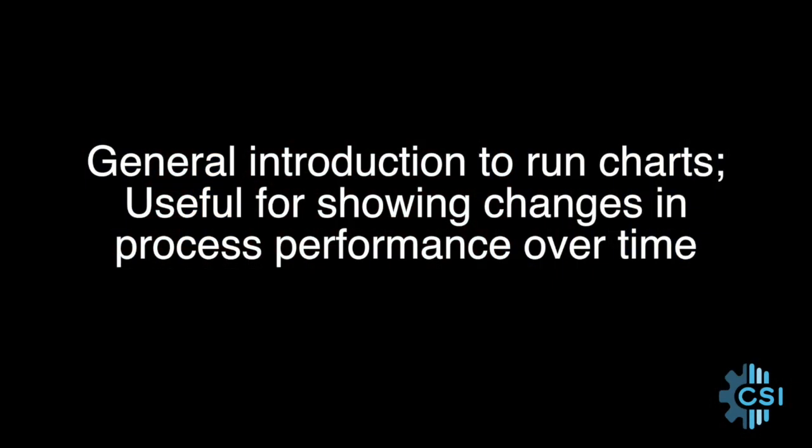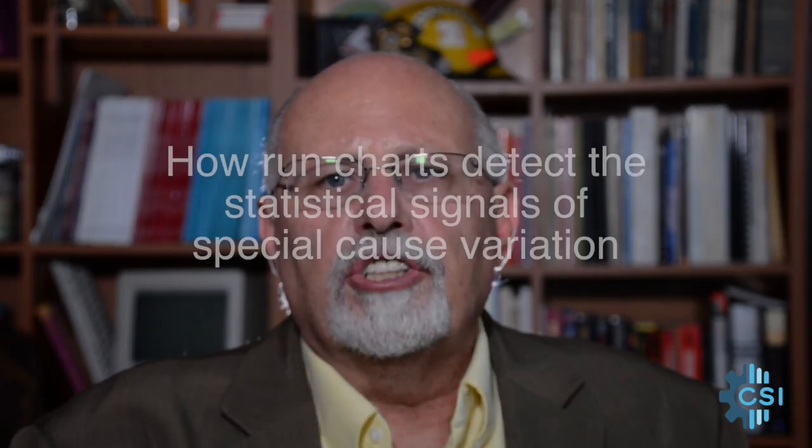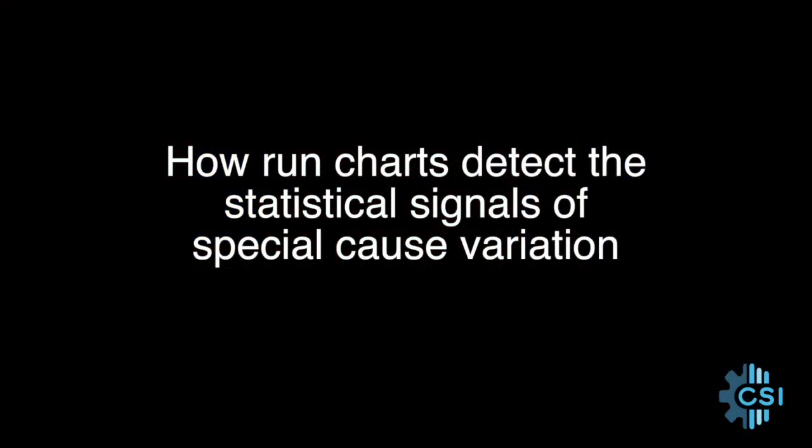This is part 4 in our series on run charts. In part 1, we learned about run charts in general, and why they are so helpful in seeing how process performance changes over time. We also learned how to determine if the variation we see in the performance is just common, normal, everyday variation, or if the variation we see indicates that something different, something special is going on — that indicates process performance has fundamentally changed. We learned that run chart rules can be used to help us detect those statistical signals of process change.